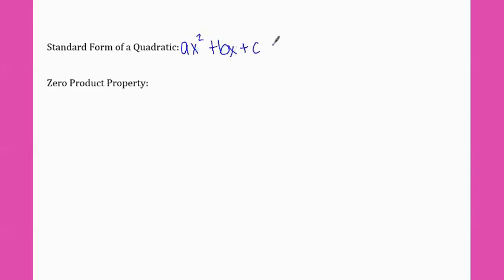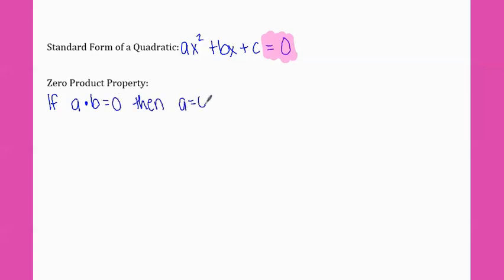So to review: the standard form of a quadratic is ax squared plus bx plus c, and it always has to equal zero. This is very important for what we're doing today. That's because of the zero product property, which says if a times b equals zero, then a equals zero or b equals zero — or both of them can equal zero.